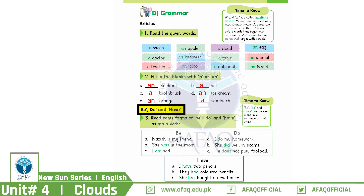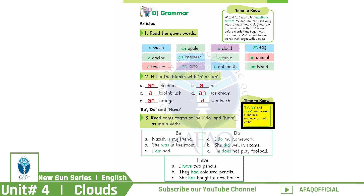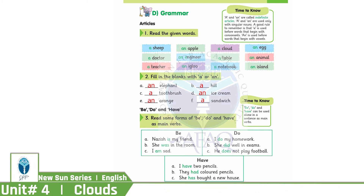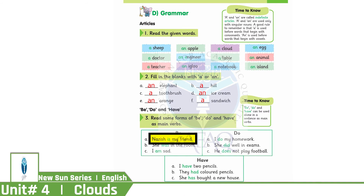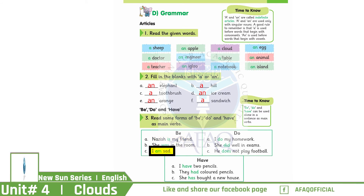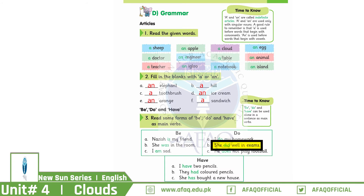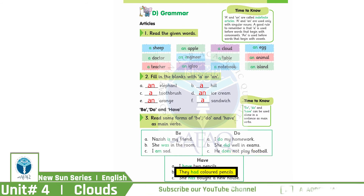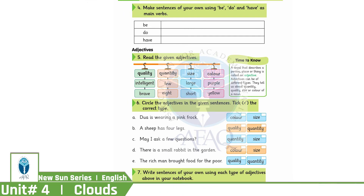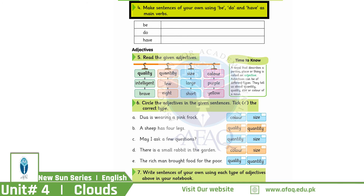Now let's talk about be, do, and have. Be, do, and have can be used alone in a sentence as main verbs. For example — be: Nazish is my best friend, she was in the room, I am sad. Do: I do my homework, she did well in exams, he does not play football. Have: I have two pencils, they had colored pencils, she has bought a new house. Now practice on page number 27 by making sentences with be, do, and have.